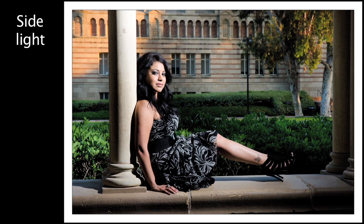I will be talking about that in my other tutorials. Of course when you are using flash or strobe it's much easier to position the light at the angle you want. But if you are using available light — let's say sunlight — then you will have to rotate the person or object towards the light.